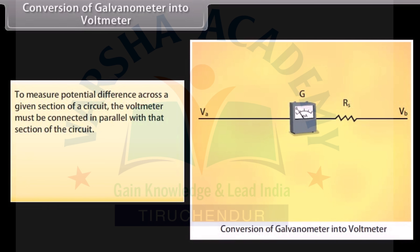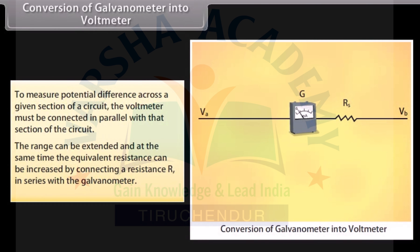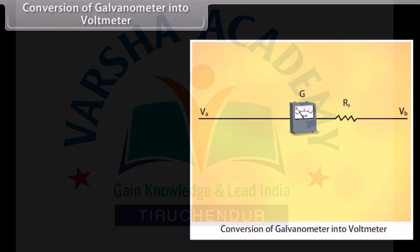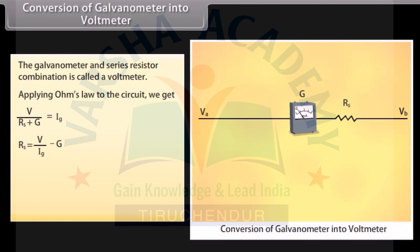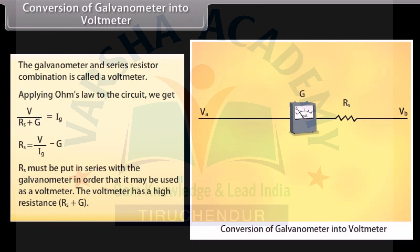To measure potential difference, the voltmeter must be connected in parallel with the section of the circuit. The range can be extended and the equivalent resistance increased by connecting a resistor R_S in series with the galvanometer. Applying Ohm's law: V / (R_S + G) = I_G, which gives R_S = V / I_G − G. This series resistor R_S must be connected with the galvanometer for use as a voltmeter. The voltmeter has a high resistance of (R_S + G).